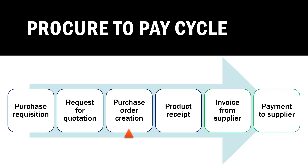Upon receiving a purchase order confirmation, the supplier lets the organization know the tentative delivery date. For example, the supplier confirms that the chairs will be delivered in the next seven days. On the seventh day, the organization receives the office chairs, and the people receiving the goods confirm that the material has been received in the system.